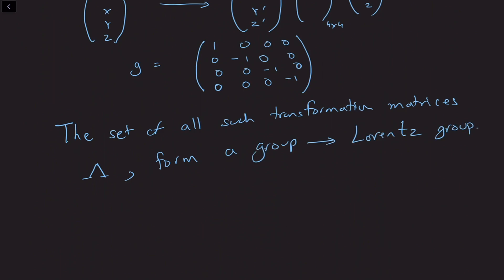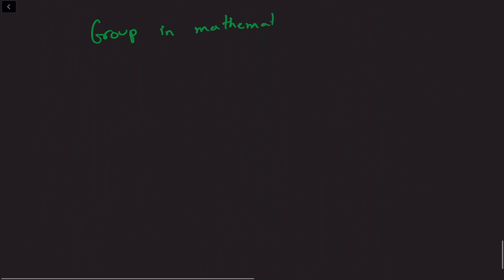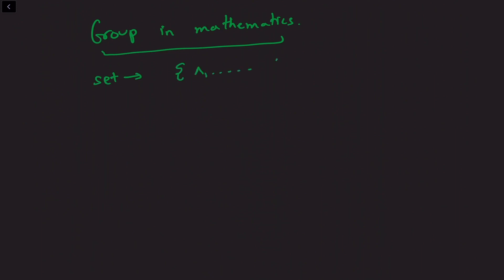What is a group? Let me remind you of the mathematical definition of a group. A group in mathematics consists of a set of elements, which we'll denote as lambda 1 through lambda n. It could be a finite or an infinite set, and this set of elements has a group operation on it.